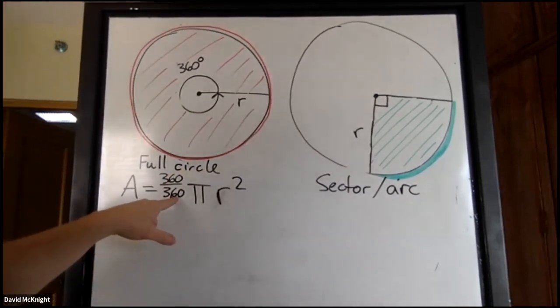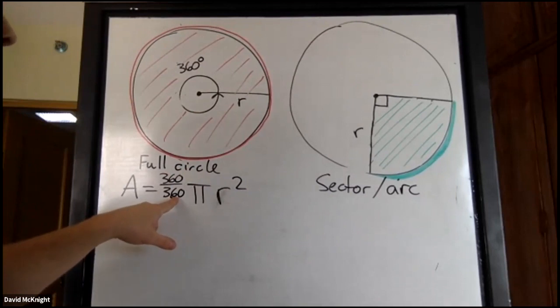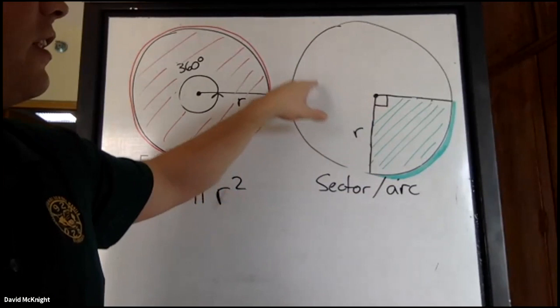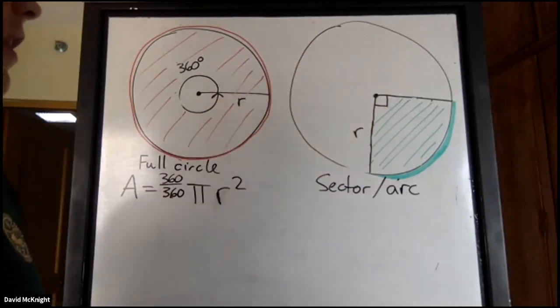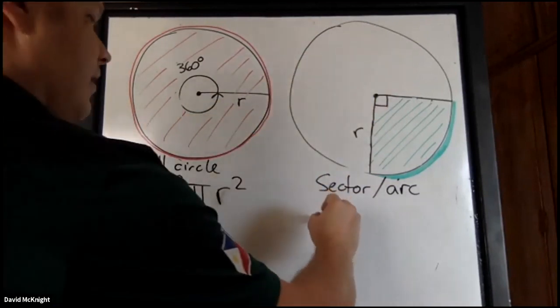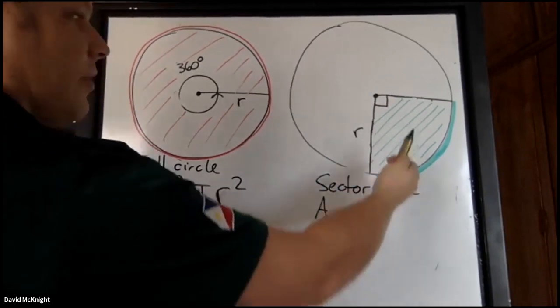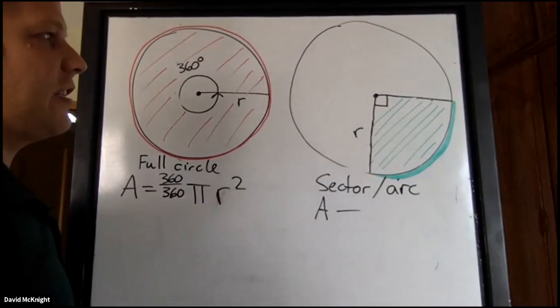Now look at, here we have a sector, which is less than an entire circle. We know that area is equal to, and then how much of this 360 degrees do we have in the sector?